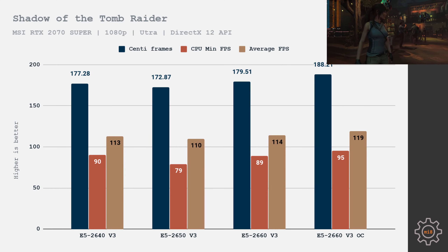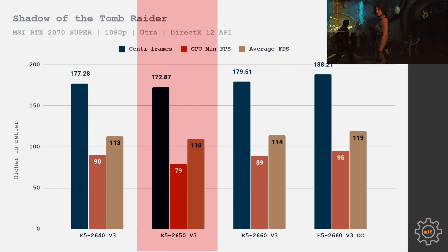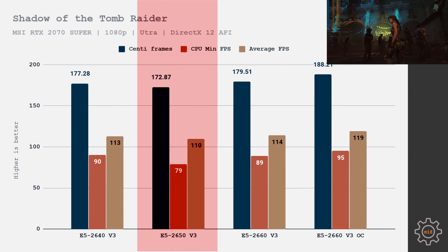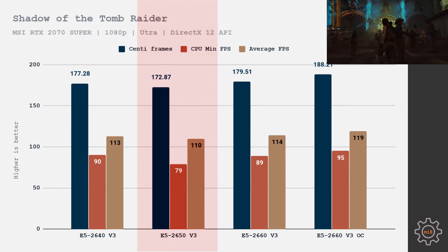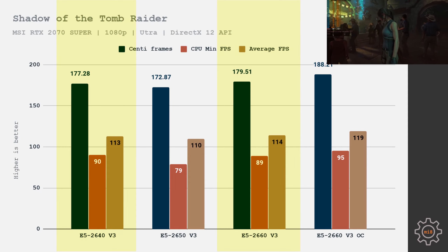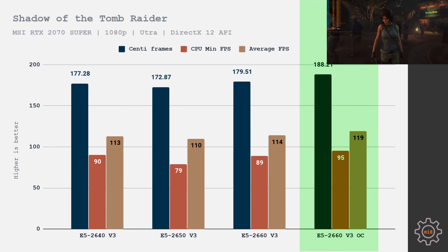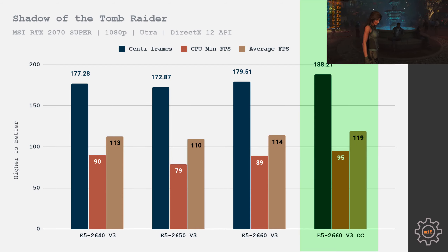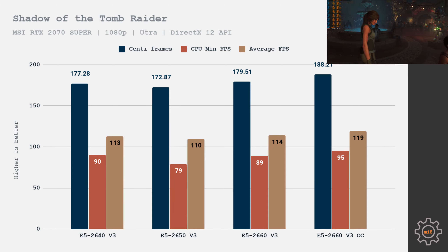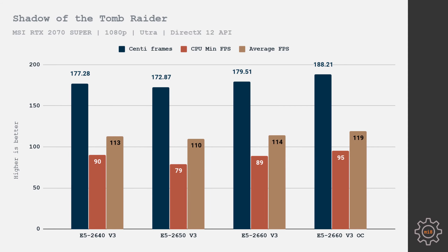Shadow of the Tomb Raider was tested at 1080p with the ultra graphics preset and DirectX 12 API. Once again, the 2650 takes last place with 79 fps minimum when CPU-bound and 110 fps average, while the 2640 and 2660 achieve 90 fps minimum and 113 fps average. Overclocking the 2660 gives a slightly better result: 95 fps minimum when CPU-limited and 119 fps average. Tuning memory and reducing latency appears to give a nice bump in this game.